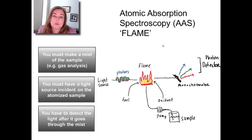In atomic absorption spectroscopy, you've got three important things to do. First, you must make a mist of the sample. You take your sample, it's sucked up by a straw, and you make a mist—like a perfume mister or spray bottle, but more complicated. You have to turn it into gas so it can interact with the flame.